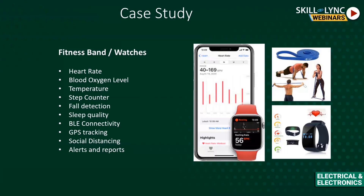Other fitness features include step counting and fall detection, which both use a single sensor — the accelerometer — which calculates the acceleration of your body based on gravity. It measures acceleration in three dimensions: X, Y, and Z axes. You may have experienced this sensor in your cell phone — when you turn your phone to landscape mode, the video or photo rotates automatically. That's the accelerometer or gyroscope at work.